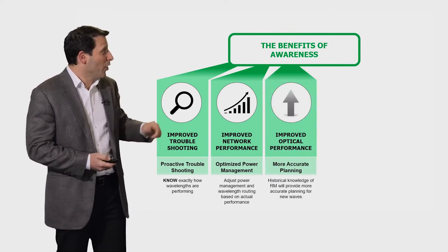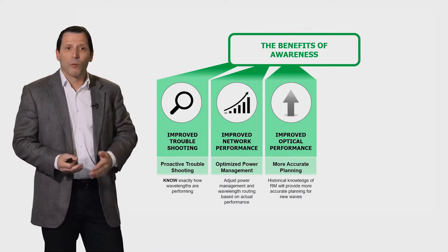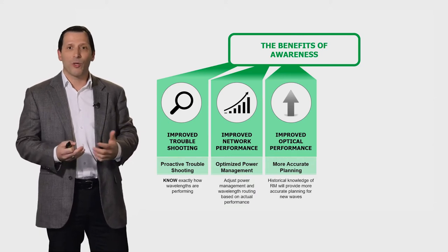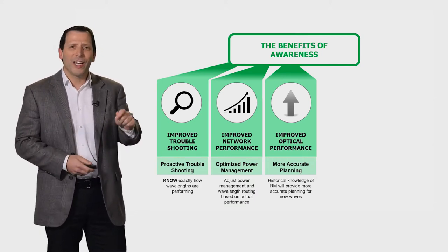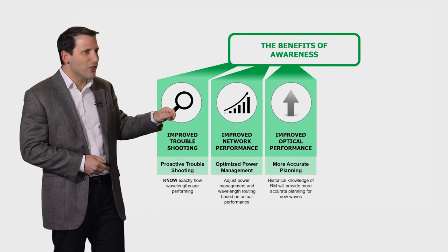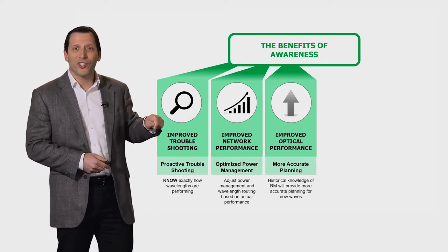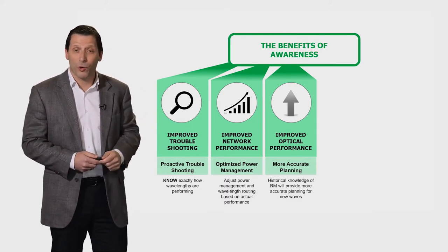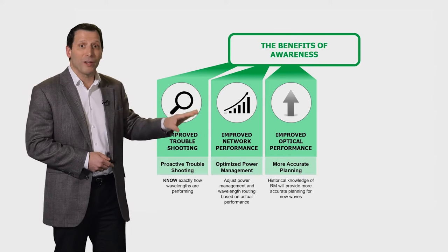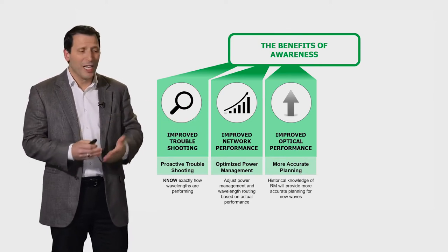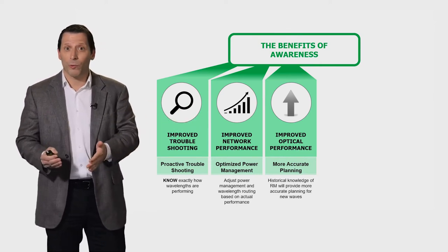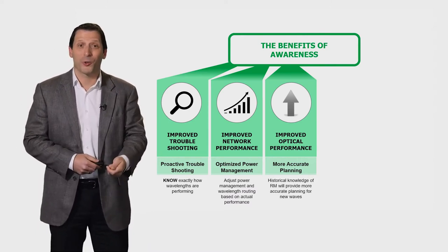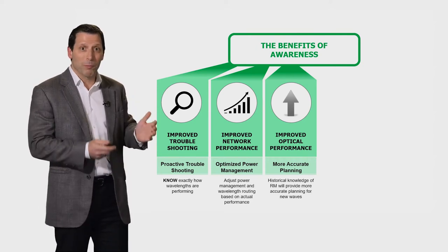The third benefit is more accurate planning. When you go to plan actual wavelengths in the network, it's not based on a bunch of estimates on the way you think things are going to perform. You can actually use historical information from wavelengths in the network — how they've actually degraded over time, how they're actually impacted by other impairments in the network — to do better planning of new wavelengths. All these things are used to get more out of your network: enable you to buy fewer transponders, regenerate less often, have more potential restoration paths in the network, and just get more out of the network.